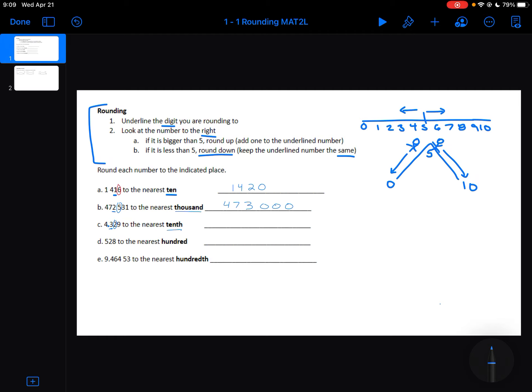So I'm going to keep my underlined digit the same and change the after ones to a 0. Now with a decimal, you don't really have to write these 0s, but you can if you want to.